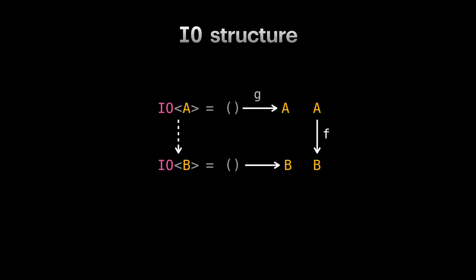If we name our IO of A function g, we can compose g and f like this, which results in a function from nothing to B. And this function is exactly what we were looking for. IO of B is a function from nothing to B. Writing the definition of map function, it receives function f. It then returns a new function that receives function g and returns the composition of f and g as the result.